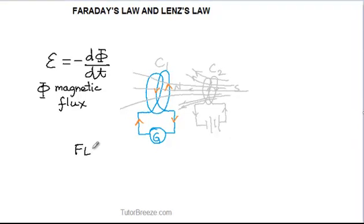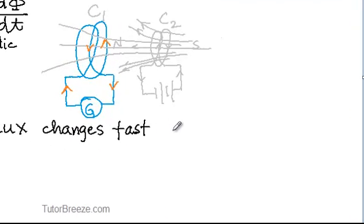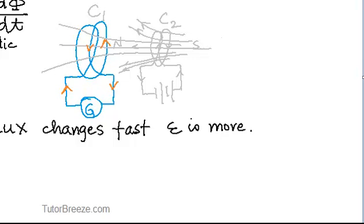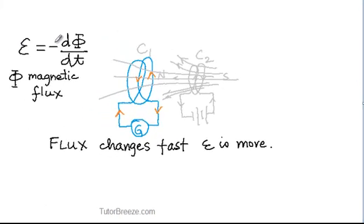If the flux changes fast, dΦ/dt would have a greater value and the induced EMF is more. If the flux changes slowly, the induced EMF is less. The negative sign shows that the induced EMF is in a direction opposite to the cause which produces it. We will discuss Lenz's law, which will explain the reason for that negative sign.